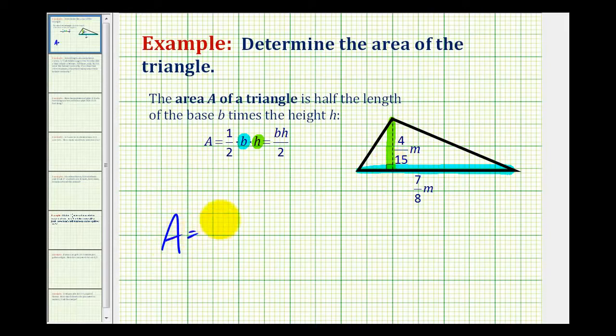So our area is going to be equal to one-half times seven-eighths of a meter, and I'm going to go ahead and include the units and I'll show you why at the end, times the height which is four-fifteenths of a meter.